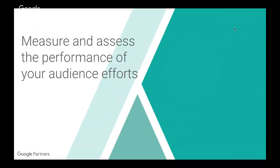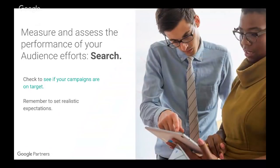How do we measure and assess the performance of your audience efforts? On search, we want to check if campaigns are on target by looking at things like click-through rate — are the people I'm targeting actually coming back to my website? We want to set realistic expectations in order to under-promise and over-deliver. We also want to make sure we're using an attribution solution that's most representative of our efforts, seeing which campaigns bring the most value and then bidding against them accordingly.